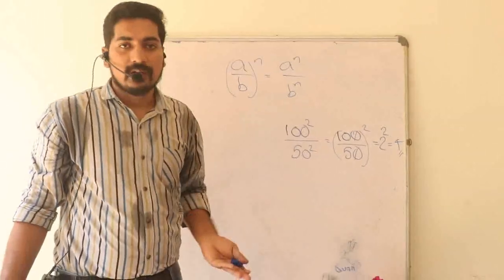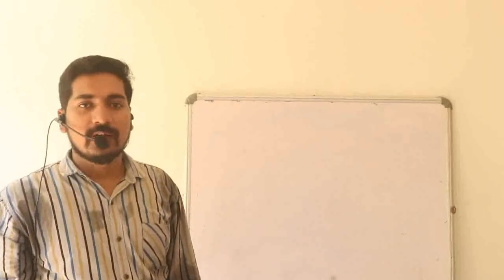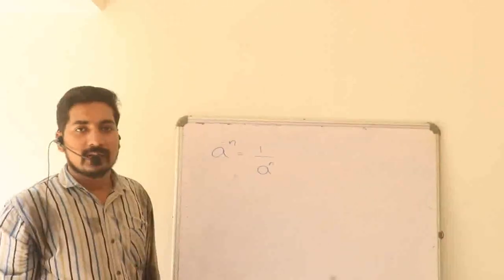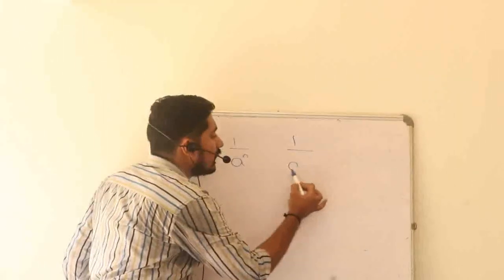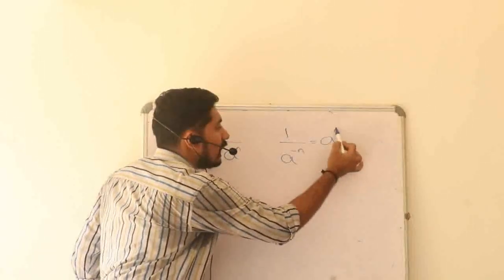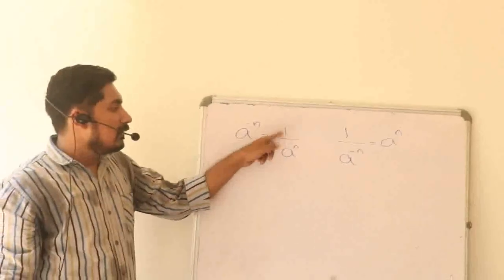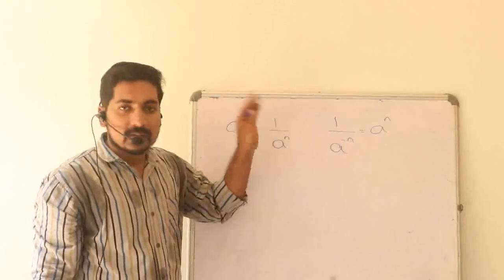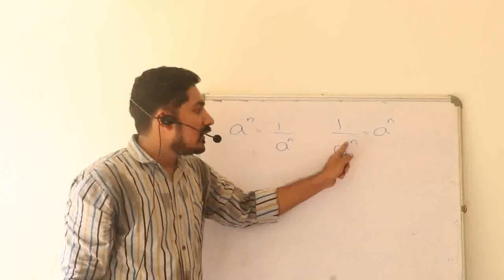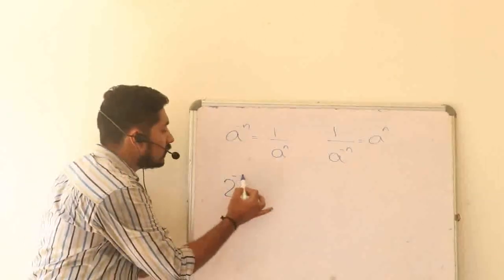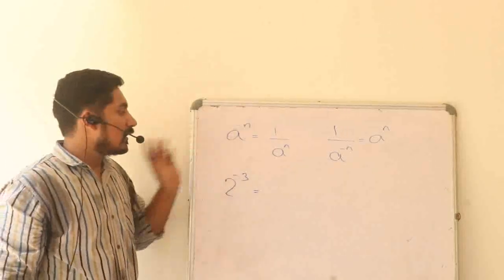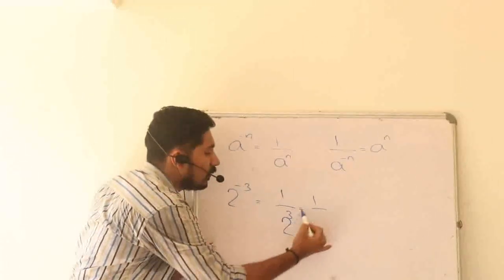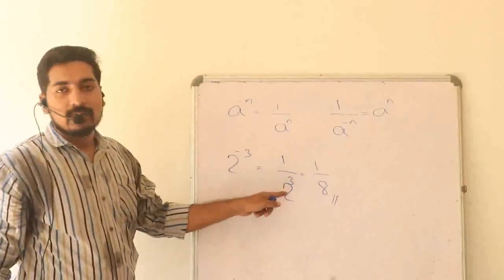Now we have to do a pattern. Let's go to the last rule: a raised to minus n equals 1 divided by a raised to n. That means 1 by a raised to minus n equals a raised to n. For example: 2 raised to minus 3 equals 1 divided by 2 raised to 3. 2 cubed is 2 into 2 into 2, which equals 8.